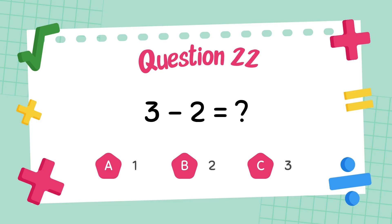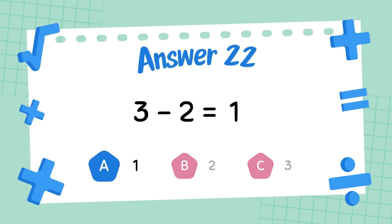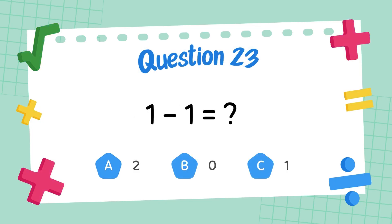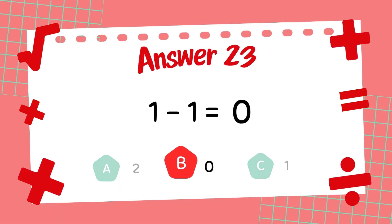What is 3 minus 2? The answer is 1. What is 1 minus 1? The answer is 0.